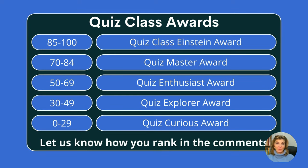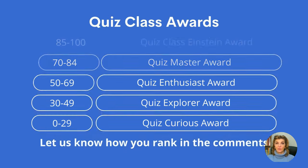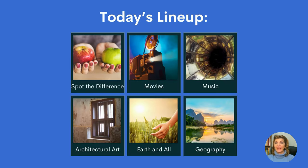So here we have our quiz class awards. Five different awards and our six categories are: spot the difference, movies, music, architectural art, earth and all, and the last one geography.